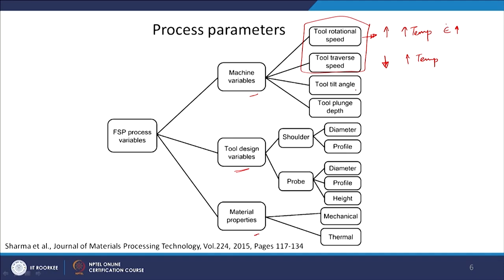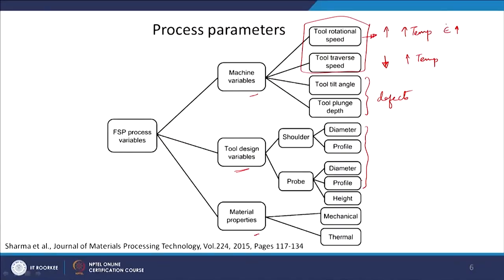Tool tilt angle and plunge depth will have an important bearing on defects in this process, and by manipulation of these two parameters people were able to achieve defect-free processing. In tool design, the shoulder and pin diameter and their profile affect heat generation — a higher shoulder diameter gives more heat generation. Similarly, a bigger pin diameter gives higher peripheral velocity, which affects your strain rate. So tool design — both dimensions and profile — is very important.